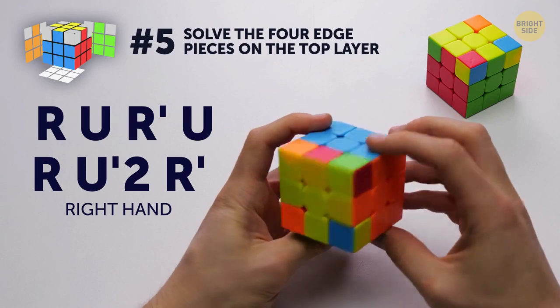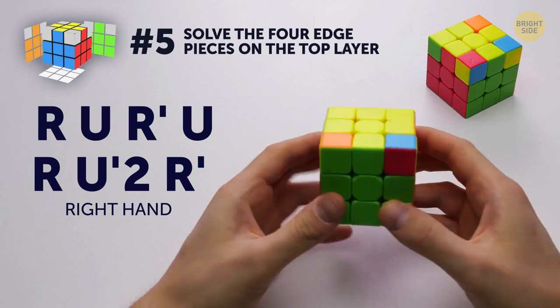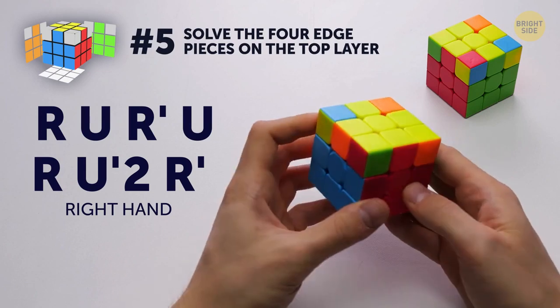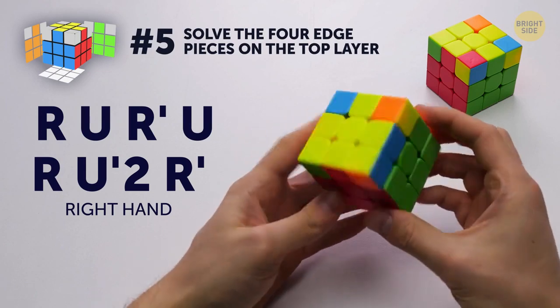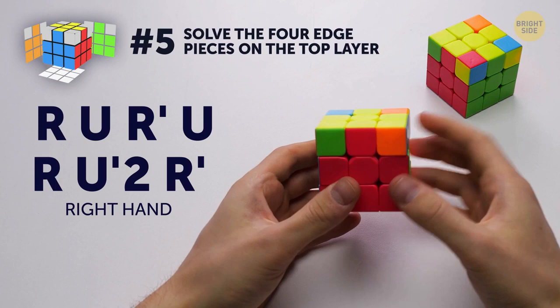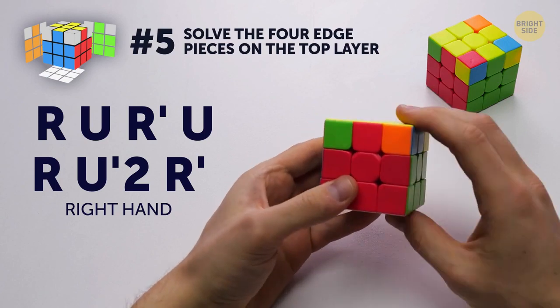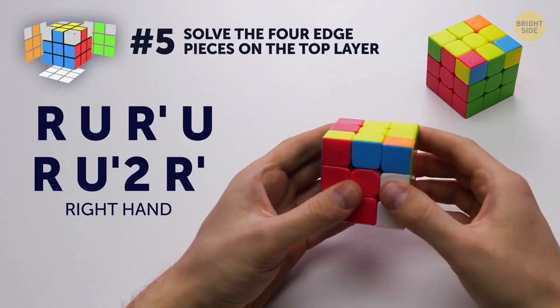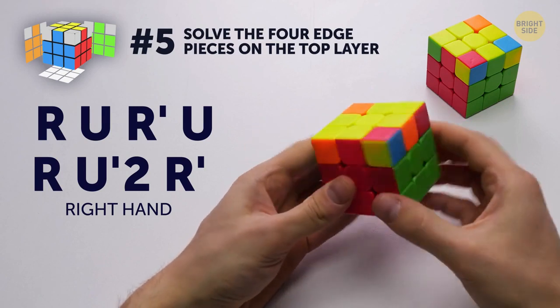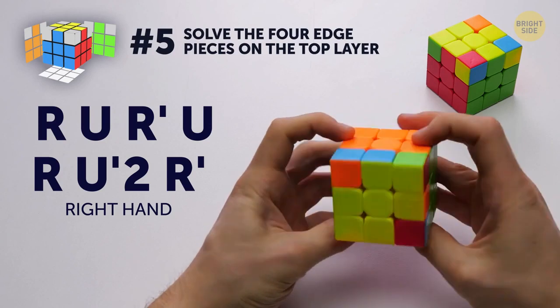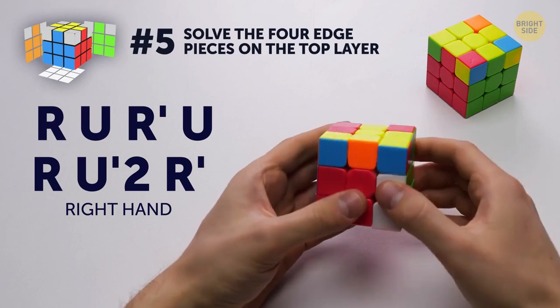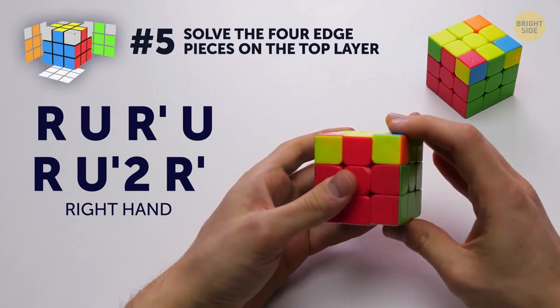Again, only one edge should coincide in color. Keep that one in front of you and use the same algorithm until the remaining edges get in the right positions. Voila!